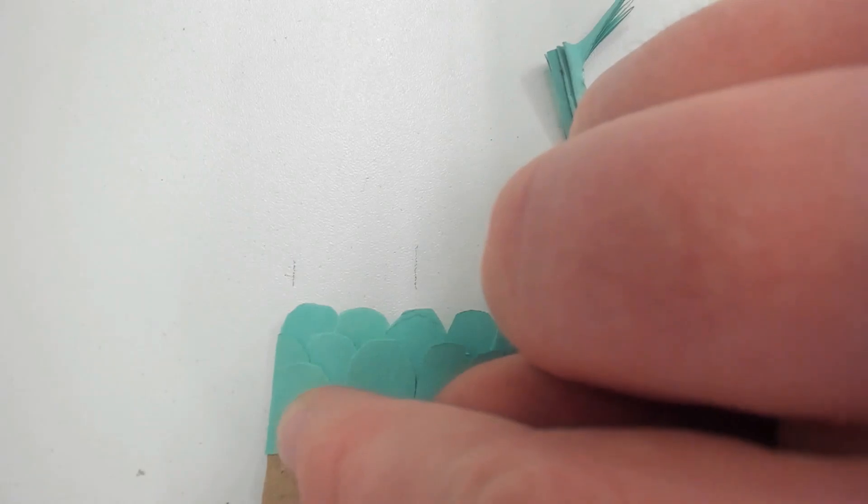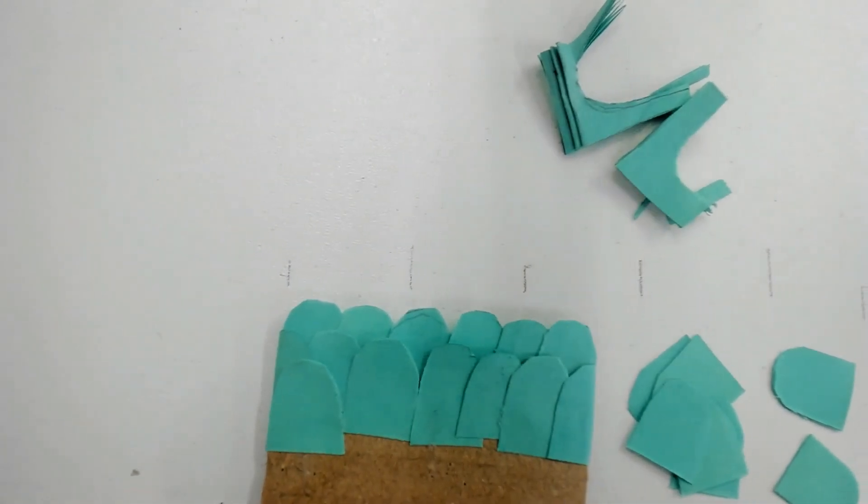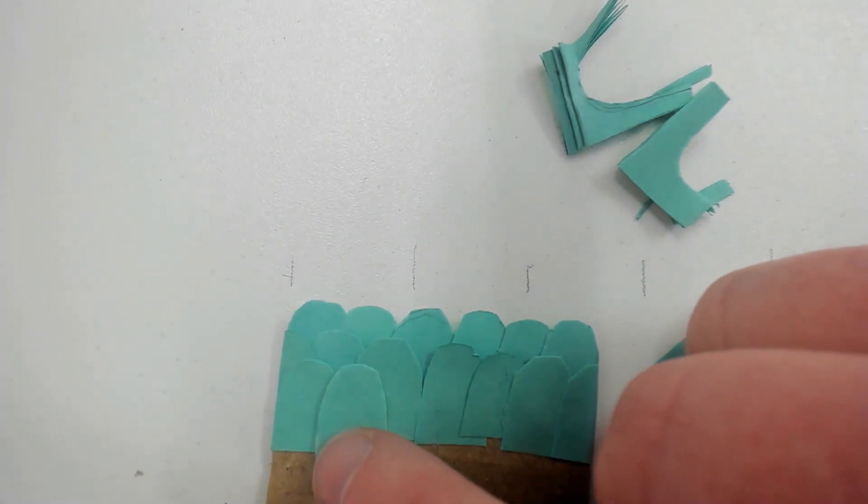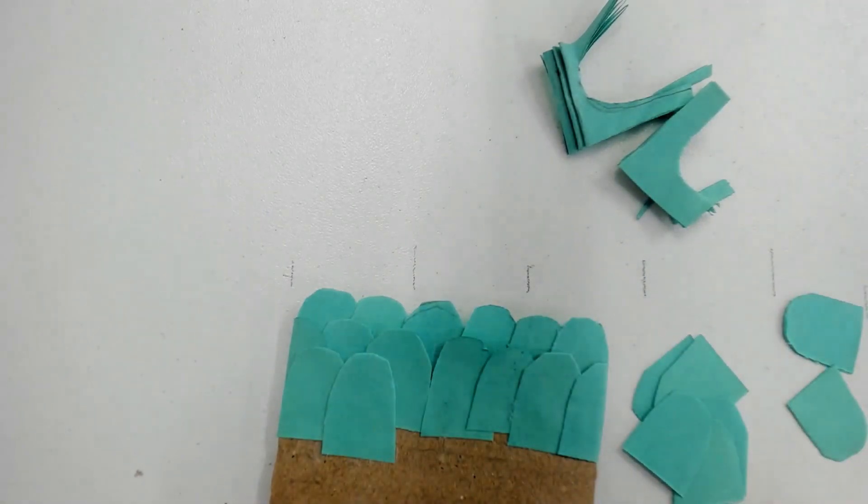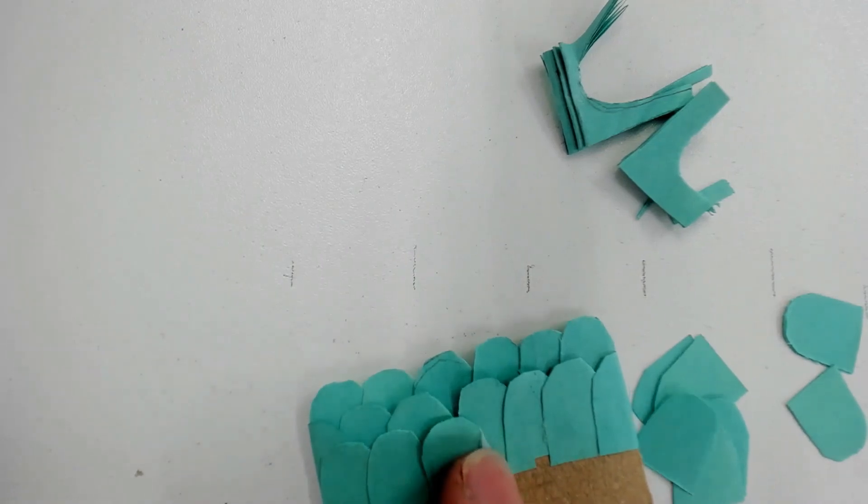Let's try and start from one side and move to the next. So the key thing on this is to only put glue on the base of your scale. Make sure you follow the pattern and keep it nice and orderly.